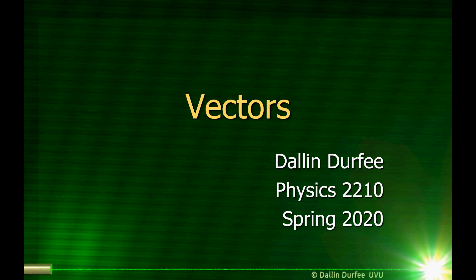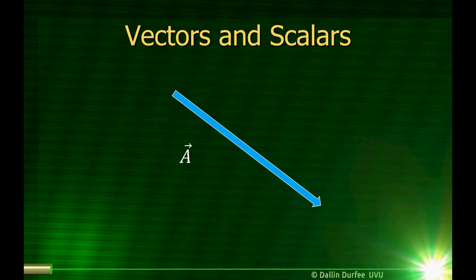Today we're going to go over a very quick introduction to vectors. What are vectors? Well, a scalar is something that just has a magnitude. Like the number 4 is a scalar, or the quantity 100 degrees C, that's a scalar, or 50 meters, that's a scalar. A vector not only has a magnitude, but it also has a direction.